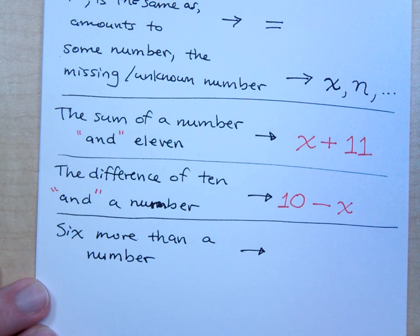The first math word I see here is what? More than. No, the first math word I see is six. But it says six more than. That means I'm doing what? Adding. That means I'm, what am I adding? Six.